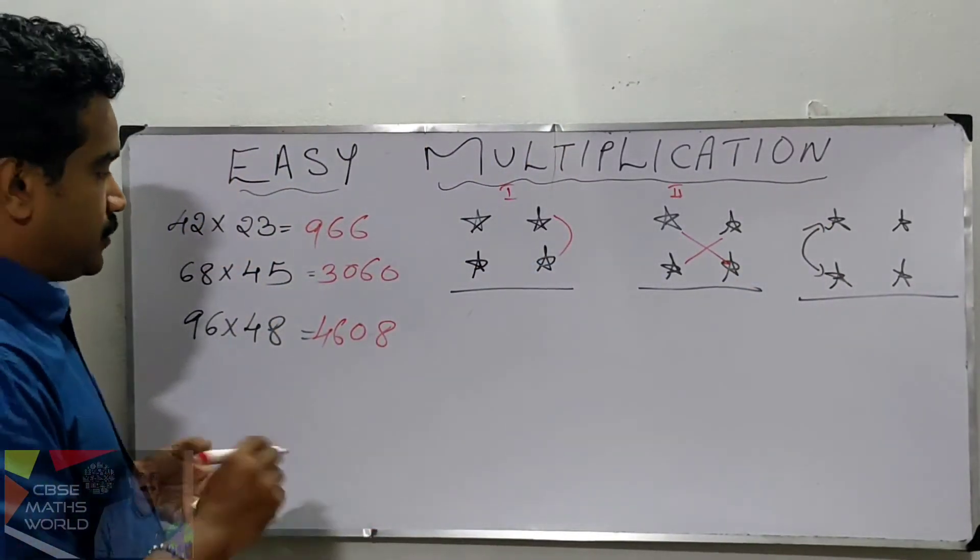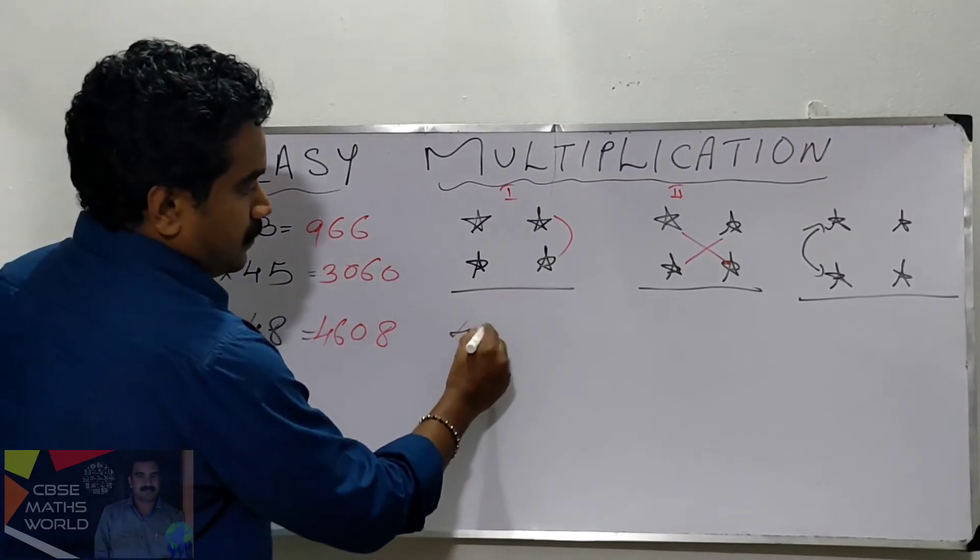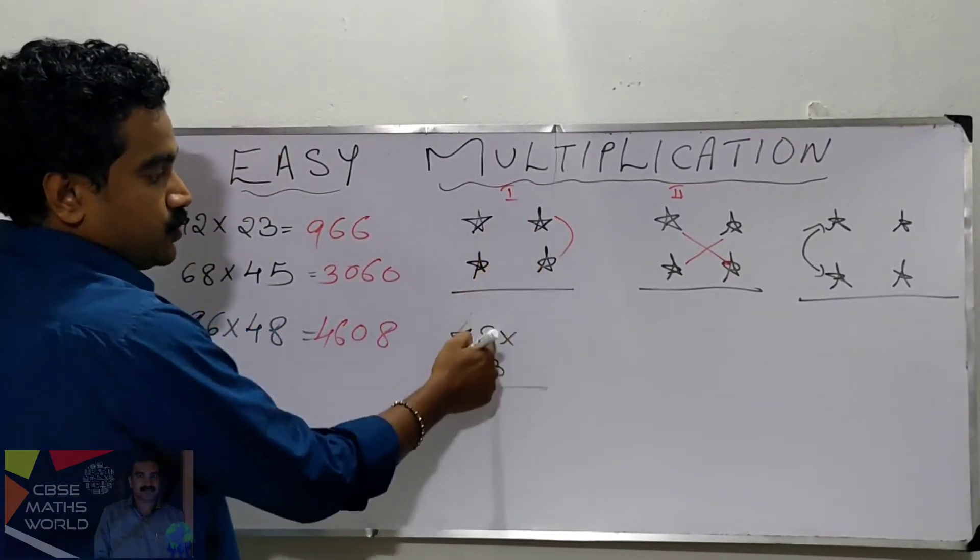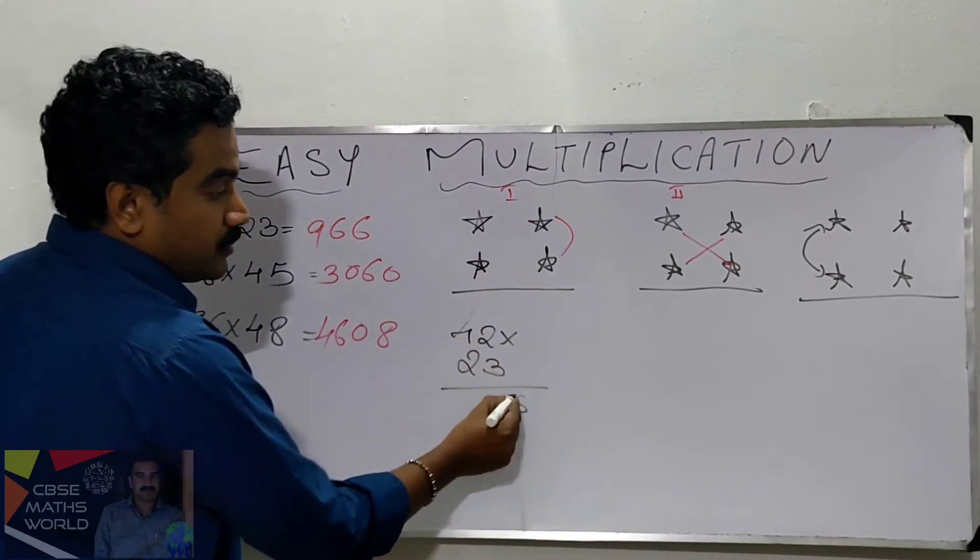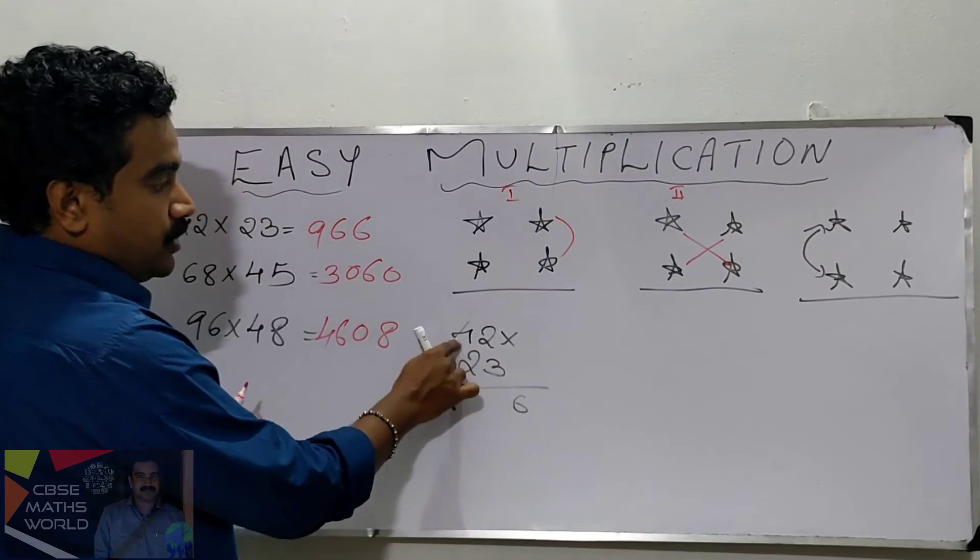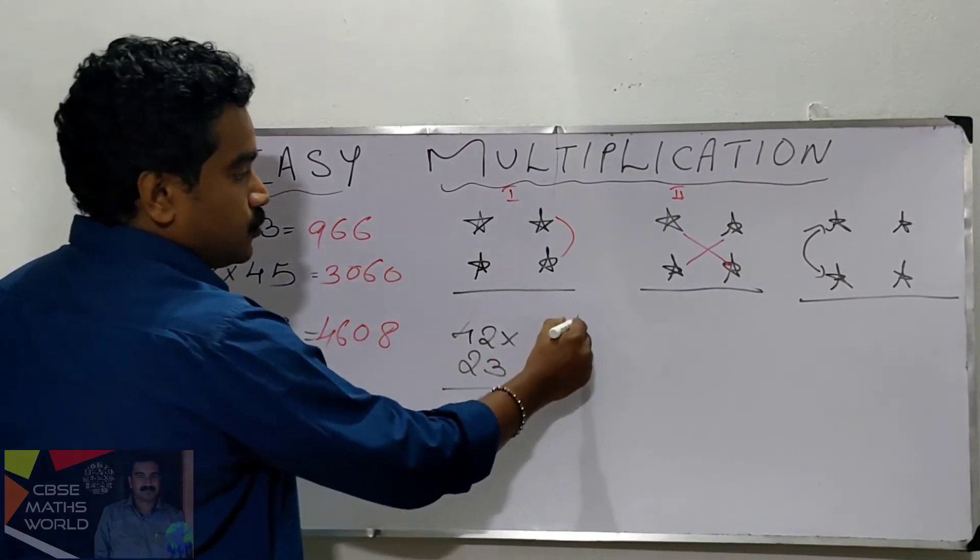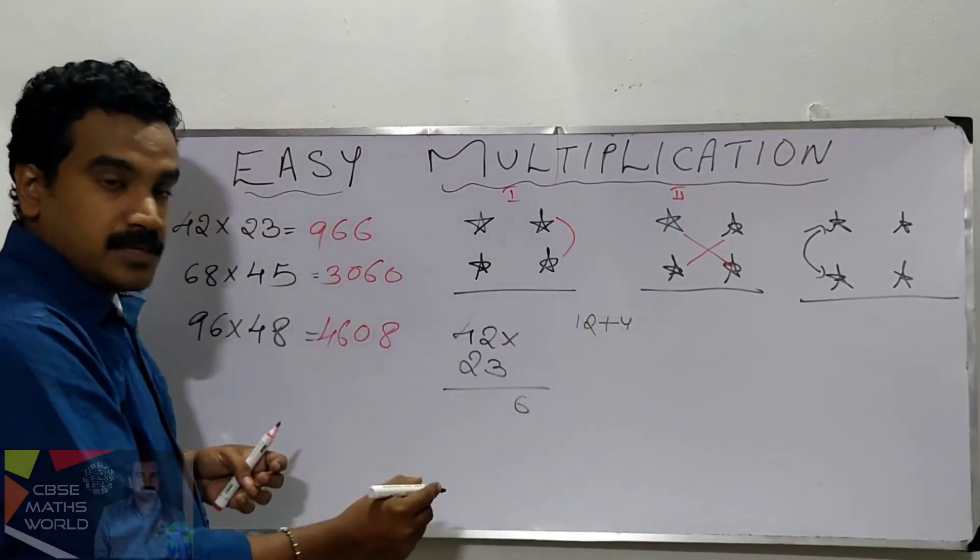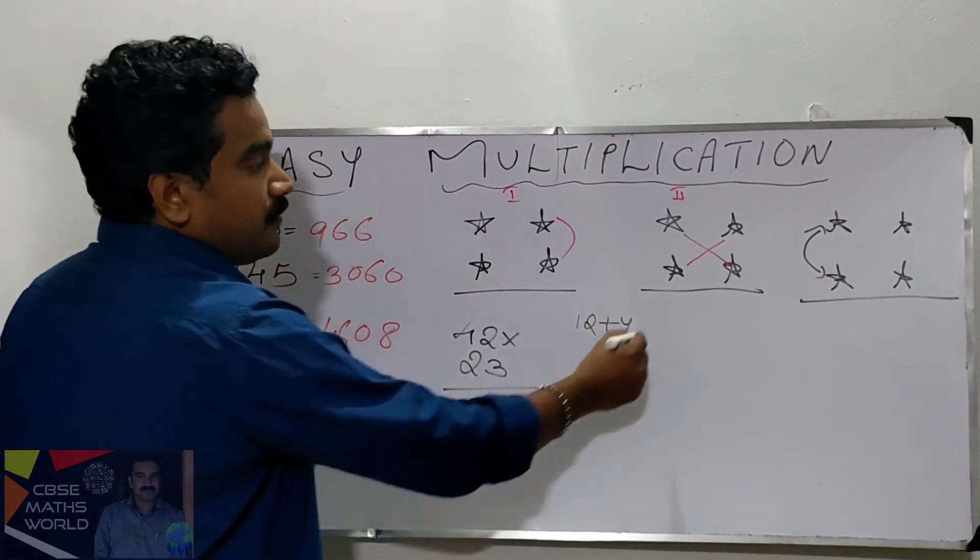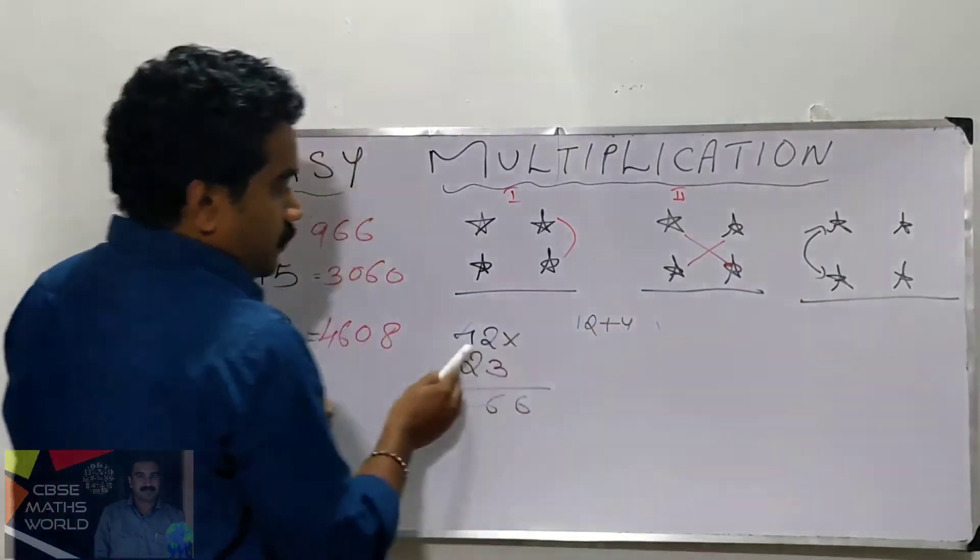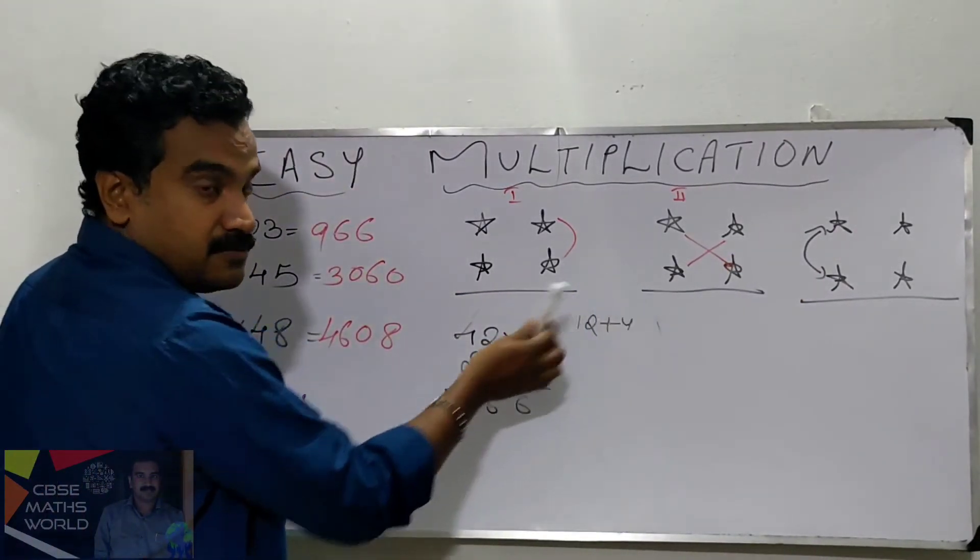Look at the first question: 42 into 23. First we are multiplying these two: 2 into 3 is 6. Then we are cross multiplying and adding. 3 into 4, what is 3 into 4? Actually 12. Then 2 into 2 is 4. What is 12 plus 4? 16. You are writing 6 only here. We are taking this carry 1.